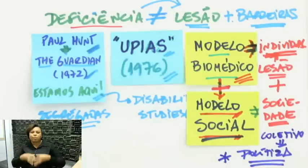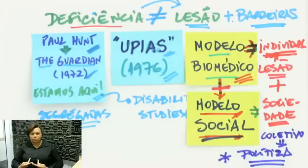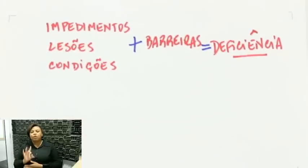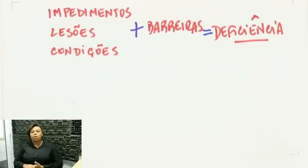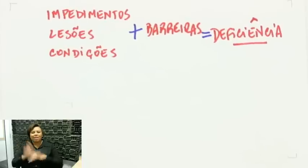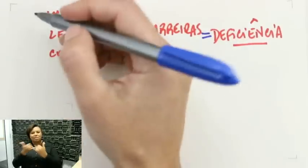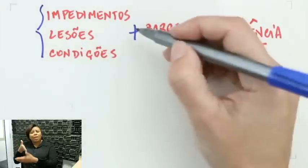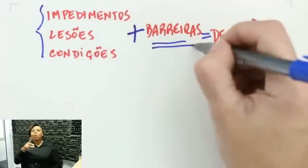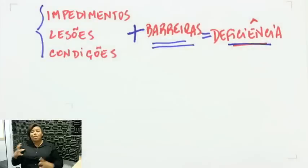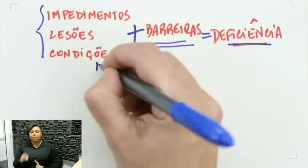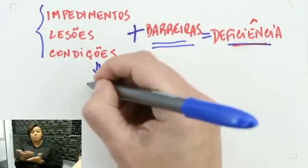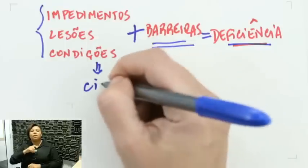O modelo social não nega o modelo biomédico — ele se soma a ele. O que ele vai dizer? Sim, as pessoas têm uma lesão, mas além dessa lesão a sociedade é deficiente. São as barreiras que a sociedade está colocando que impedem que essas pessoas experienciem essa lesão como uma deficiência. O modelo social traz a questão para o coletivo, mostra que é uma questão social e portanto tem a ver com questões políticas — ele politiza a questão da deficiência, traz a discussão para a esfera dos direitos sociais e dos direitos humanos.